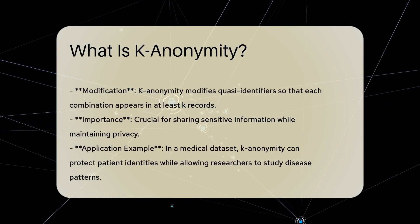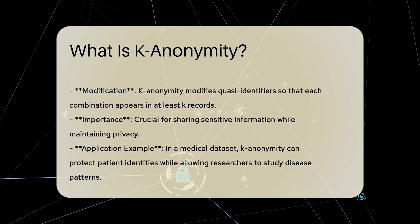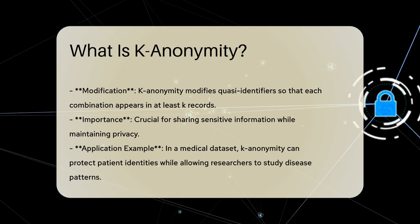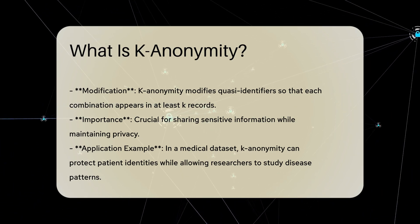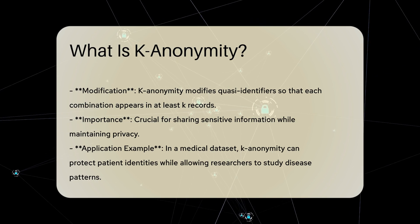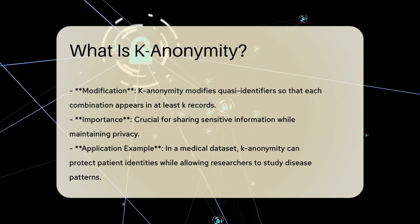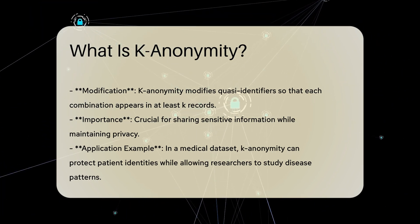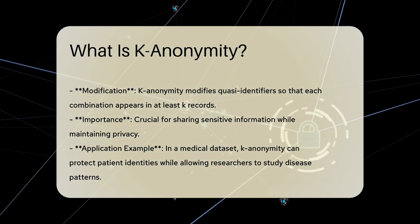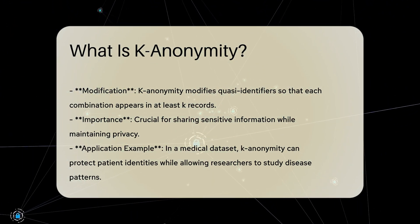K-anonymity modifies these quasi-identifiers so that each combination appears in at least K records. This technique is crucial for sharing sensitive information while maintaining privacy. It allows data to be used for analysis without exposing personal details. For instance, in a medical data set, K-anonymity can help protect patient identities while still allowing researchers to study disease patterns.